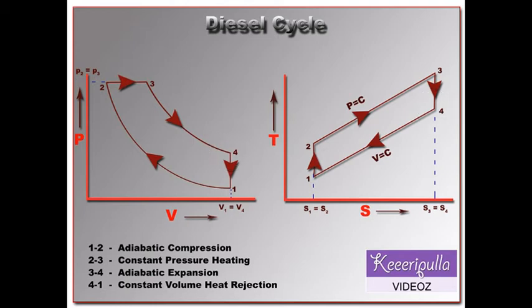Referring to the diagrams, curve one-two refers to adiabatic compression. Here pressure increases, volume decreases, temperature increases, and entropy remains constant.